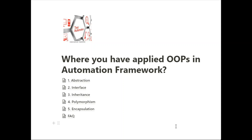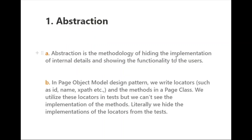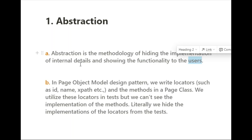Let's get started with the first concept, abstraction. Abstraction is a methodology of hiding the implementation of internal details and showing only the functionality to the user. For example, when you withdraw money from an ATM machine, you don't know how it counts the money in the background — you only see the screen and enter the amount. You are not aware of the internal implementation of the ATM machine.